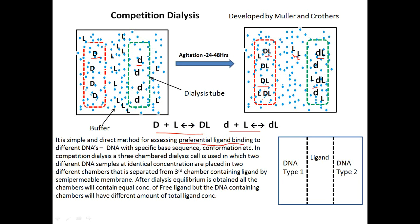Competition dialysis can be used for different types of DNA — B-DNA, A-DNA, or different base specificities. DNA with specific base sequence or conformation is taken in the competition dialysis. A three-chamber dialysis cell is used: two different DNA samples at identical concentration are placed in two chambers, separated from a third chamber containing the ligand in buffer solution by semi-permeable membranes. After dialysis, all chambers contain equal concentration of free ligand, but the DNA chambers have different total ligand concentrations.